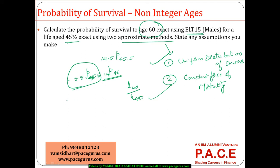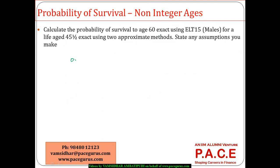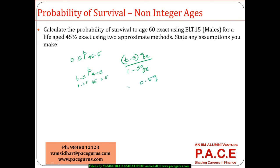Now going with the UDD assumption, I need to find 0.5 p 45.5. Using the general form for t-s p x+s under UDD, with x = 45, s = 0.5, and t = 1, this becomes: (t − s) × q_x divided by (1 − s × q_x), which equals 0.5 × q_45 divided by (1 − 0.5 × q_45). For this I require q_45.